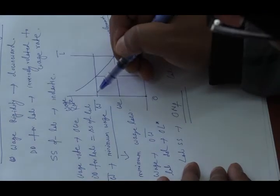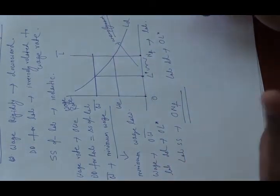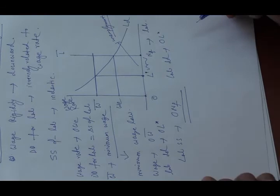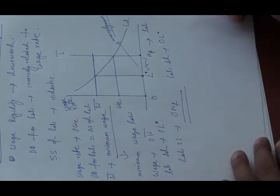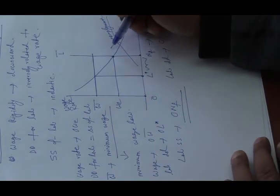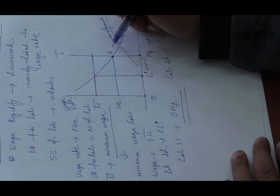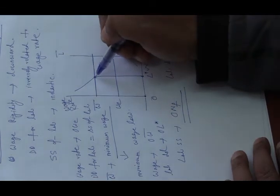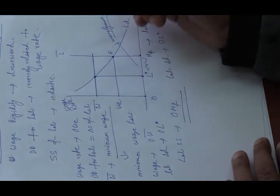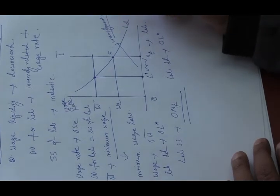Because of this downward wage rigidity, if the labour market is given freedom to operate and wage rate is flexible, the economy will find equilibrium at E. But wage rate is not flexible enough.